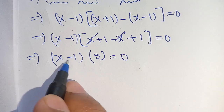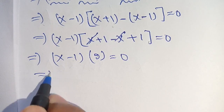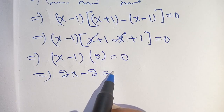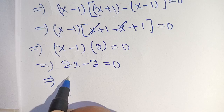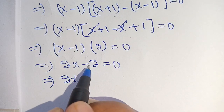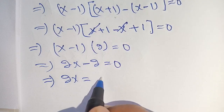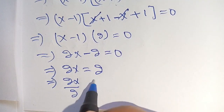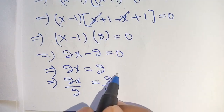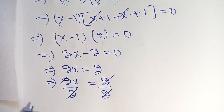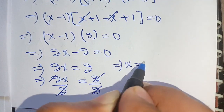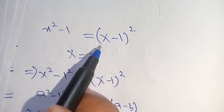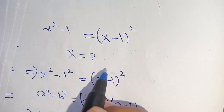Multiplying x minus 1 with 2 gives 2x minus 2 is equal to 0. So 2x is equal to 2. Dividing both sides by 2, we get x is equal to 1, which is the required value of x that satisfies the equation x squared minus 1 is equal to x minus 1 whole squared. Thus the value of x is equal to 1.